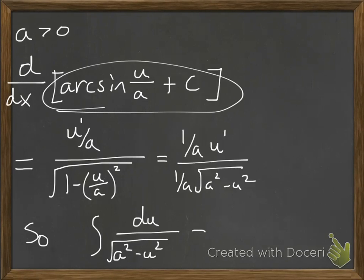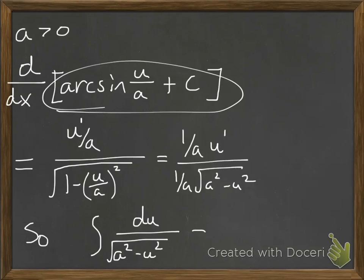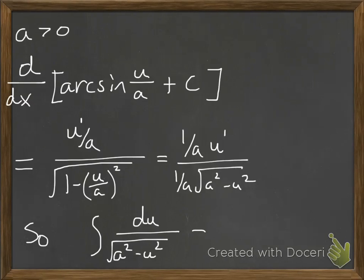Because we took the derivative of arc sine of U over A and got this, the arc sine of U over A plus C is an antiderivative. So the integral of du over the square root of A squared minus U squared equals arc sine of U over A plus your constant of integration.